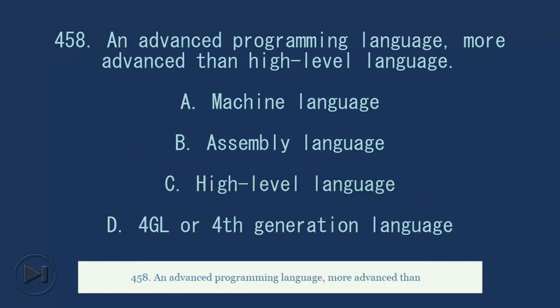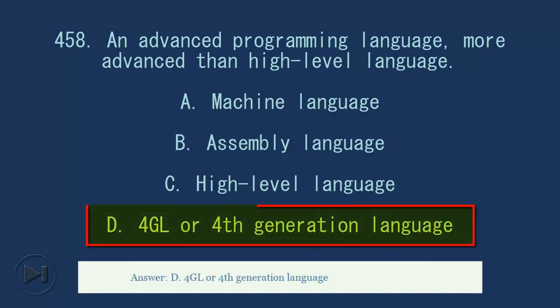458. An advanced programming language, more advanced than high-level language. A. Machine language. B. Assembly language. C. High-level language. D. Four gallons or fourth-generation language. Answer, D. Four gallons or fourth-generation language.